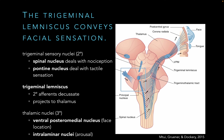We also have sensory tracts. The counterpart to the posterior column medial lemniscus pathway and spinothalamic tracts are the trigeminal lemniscus — really two tracts collectively called the trigeminal lemniscus. One tract deals with pain and temperature: those fibers arrive at the spinal nucleus of the trigeminal, which is called that because it extends down into the spinal cord, spanning from the pons through the medulla down to the spinal cord. A-delta and C fibers provide input here for pain and temperature.